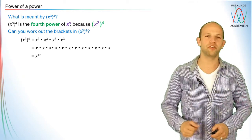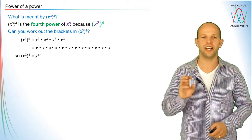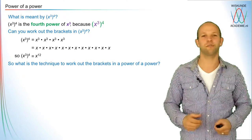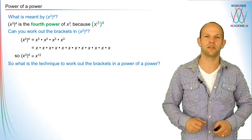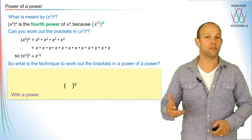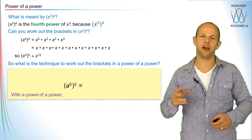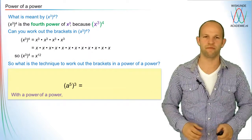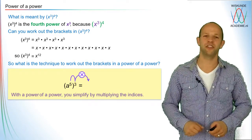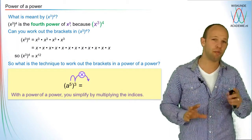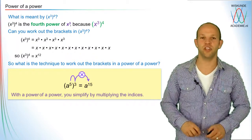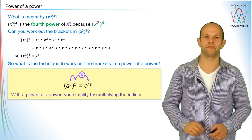So what rule do we need? You can see that x to the power three, to the power four, becomes x to the power 12. The technique to work out the brackets in a power of a power is to multiply the indices. For example, the third power of x to the power five: you multiply the indices, giving you x to the power 15. The base stays the same — x to the power 15.